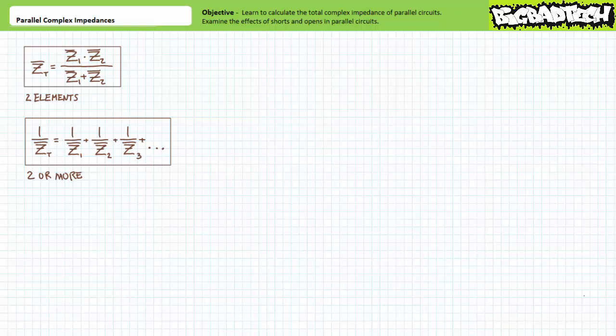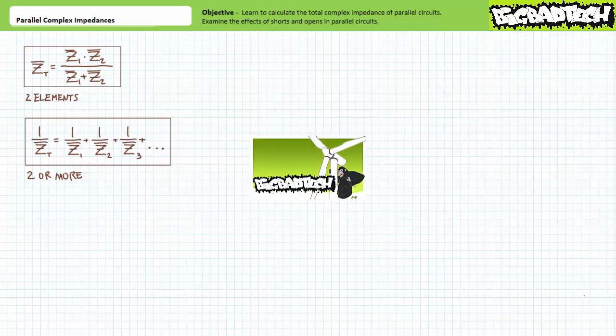Good day and welcome to Big Bad Tech. I'm your instructor Jim Pytel and today's topic of discussion is parallel complex impedances. Our objective is to learn to calculate the total impedance of side-by-side or parallel arrangements of complex impedances. This lecture operates under the presumption the viewer has watched the series complex impedances lecture available at the Big Bad Tech channel. If you haven't watched this lecture yet or only dimly recall its contents, please take the time to do so now.